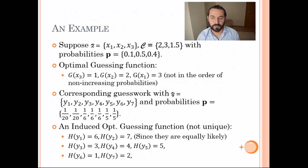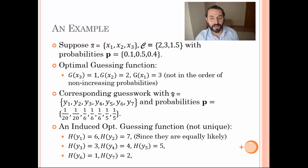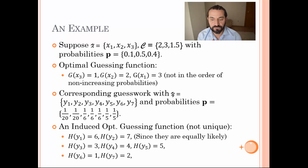Let me give you an example to show how the guessing function H is induced from G. Consider the previous costs and probability distribution for the three-item set X. The optimal guessing function turns out to be G equal to 1, 2, and 3 — that is the order of guessing these values. The corresponding guesswork now has 7 items with corresponding probabilities as shown in this slide. The induced guessing function is not unique, but one of them has H(Y1) = 6 and H(Y2) = 7, and so on. The non-uniqueness of this guessing function is due to these symbols having the same probability and the same cost values.